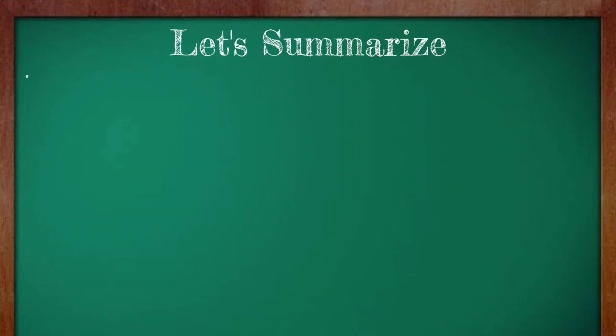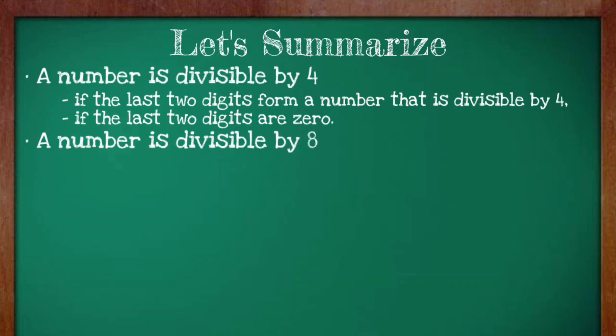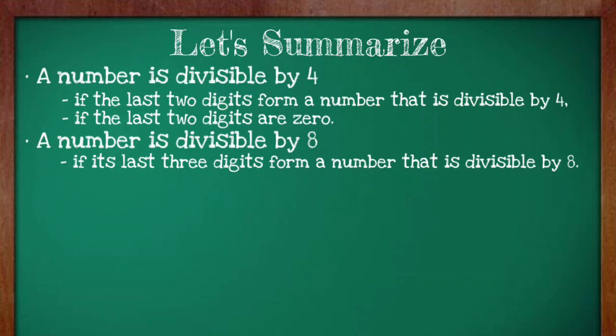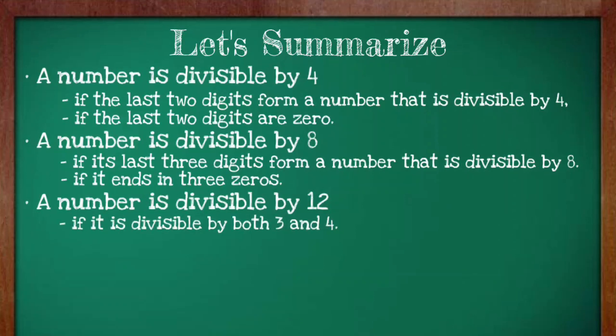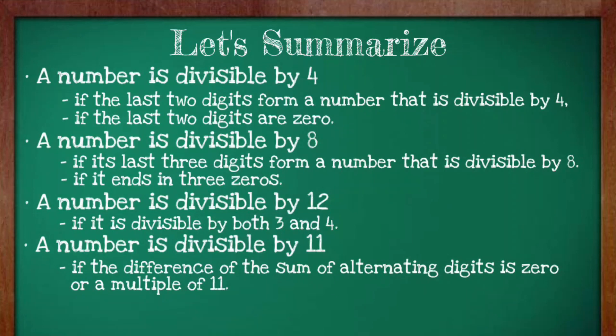Let's summarize. A number is divisible by 4 if the last two digits form a number that is divisible by 4 or the last two digits are 0. A number is divisible by 8 if the last three digits form a number that is divisible by 8 or if it ends in three zeros. A number is divisible by 12 if it is divisible by both 3 and 4. And a number is divisible by 11 if the difference of the sum of alternating digits is 0 or a multiple of 11.